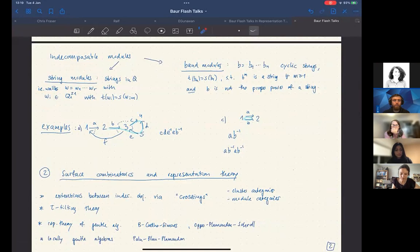So all the w_i are arrows or their formal inverses and they should compose, so that's this condition. And then band modules would be strings. I should say something. So we never want A, A inverse or A inverse A in such a walk and then we call it a string.